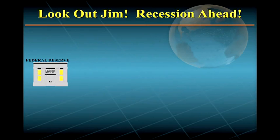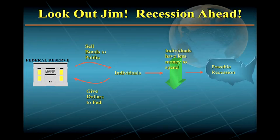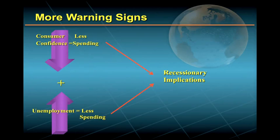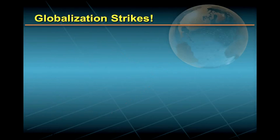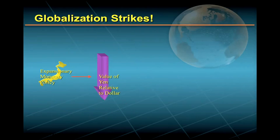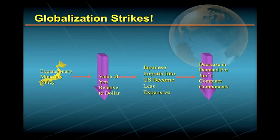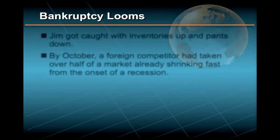For example, he had read in the Wall Street Journal that the Federal Reserve recently raised the bank discount rate and sold bonds in the open market, but Jim didn't see this as contractionary monetary policy that might trigger a recession. Instead, he just grumbled about the higher interest rate on his business loan. Nor did Jim see the recessionary implications of several stories on CNN reporting a fall in consumer confidence and a slight uptick in the unemployment rate. And even though Jim had noted a small blurb in Business Week about Japan's shift towards a more expansionary monetary policy, Jim didn't have a clue that this would cause the value of the yen to fall relative to the dollar and give his Japanese competitors a big leg up.